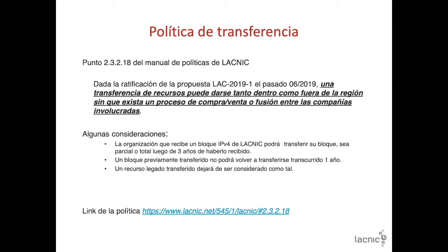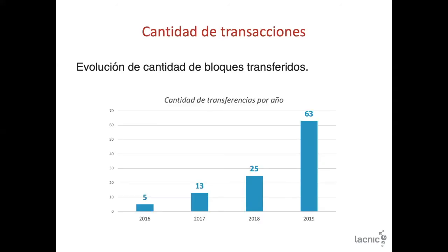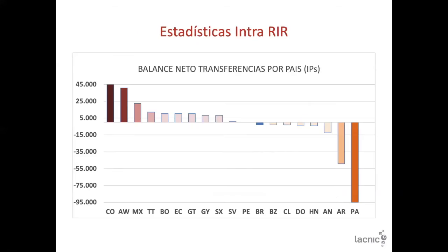Now, talking about the number of transactions: there's been a steady increase of transfers since 2016 when we first implemented it — there were only five that year. Then in 2018 and 2019 there was quite a significant increase, up to 63 in 2019. But these are very low numbers if you consider other regions, which we'll look at later. Here you have a graph with the number of transfers and the net balance per country. On one end we have Colombia and Canada, where the net balance yields plus 45,000 — a positive balance of 45,000.